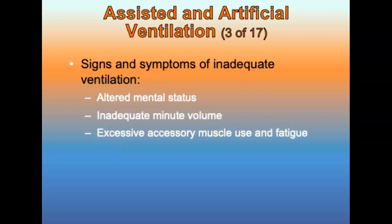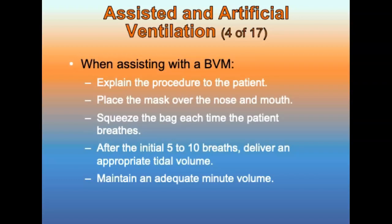The purpose of assisted ventilations is to improve the overall oxygenation and ventilatory status of the patient. Signs of inadequate ventilation include altered mental status, inadequate minute volume, or excessive accessory muscle use and fatigue. To assist a patient with ventilations using a BVM, explain the procedure, place the mask over the patient's nose and mouth, and squeeze the bag each time the patient breathes, maintaining the same rate. After the initial 5 to 10 breaths, slowly adjust the rate and deliver appropriate tidal volume to maintain adequate minute volume.